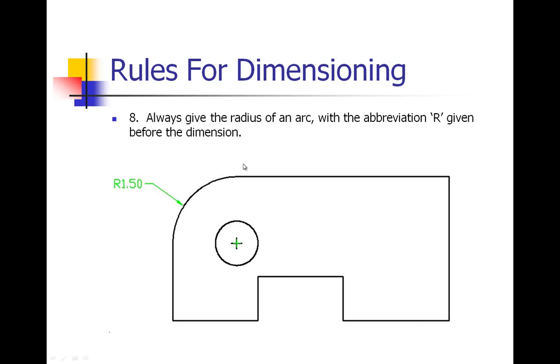Number eight: always give the radius of an arc with the abbreviation R, standing for radius, given before the dimension. Here we are giving a dimension for this arc which is not a complete circle, it's a small piece of a circle. Because it is not a full circle, we want to use a radius measurement.